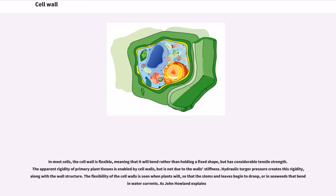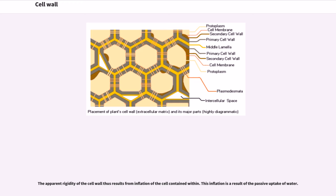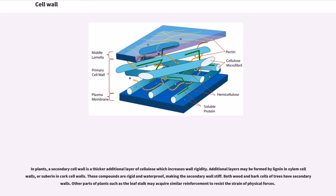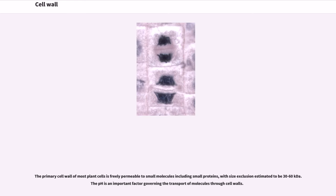The apparent rigidity of primary plant tissues is enabled by cell walls, but is not due to the wall's stiffness. Hydraulic turgor pressure creates this rigidity, along with the wall structure. The flexibility of the cell walls is seen when plants wilt, so that the stems and leaves begin to droop, or in seaweeds that bend in water currents. As John Howland explains, the apparent rigidity of the cell wall thus results from inflation of the cell contained within. This inflation is a result of the passive uptake of water. In plants, a secondary cell wall is a thicker additional layer of cellulose which increases wall rigidity. Additional layers may be formed by lignin in xylem cell walls, or suberin in cork cell walls. These compounds are rigid and waterproof, making the secondary wall stiff. Both wood and bark cells of trees have secondary walls. Other parts of plants such as the leaf stalk may acquire similar reinforcement to resist the strain of physical forces.